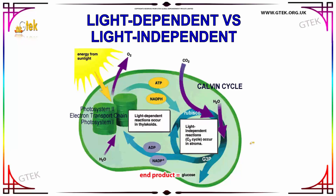Now we are going to see about light-independent versus light-dependent reactions. Both processes differ regarding sunlight: the light-dependent process is carried out in front of sunlight, and the Calvin cycle does not use sunlight for producing glucose. But both use ATP — that is adenosine triphosphate. The light-independent reaction occurs in the stroma, and the light-dependent reaction occurs in the thylakoids, which absorb sunlight.